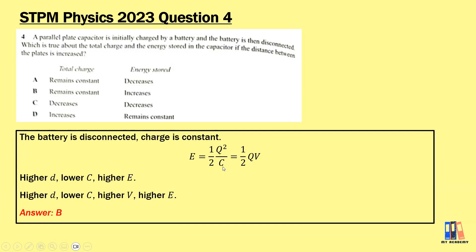Using half Q²/C, we refer to parameter C. With higher d, we get lower C, and based on this formula, lower C gives higher energy. Alternatively using half QV: higher d gives lower C, and from Q = CV, we get higher potential difference — so higher energy stored. Answer is B.